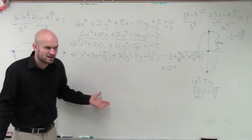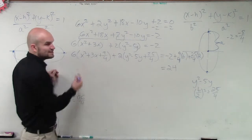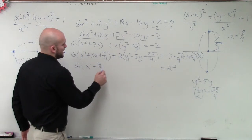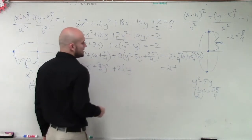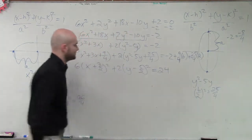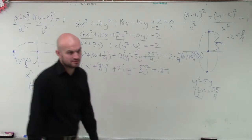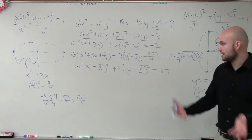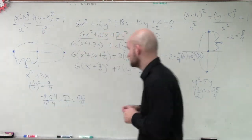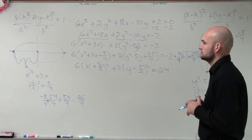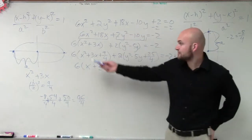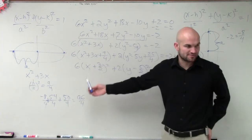Now why did we complete the square? So we could rewrite this as a binomial square. So I need to factor this down. So I have 6 times x plus 3 halves squared, plus 2 times y minus 5 halves squared, equals 24. That's the factored form of each one of these perfect squares. So I took my perfect square and rewrote them as binomial squares.